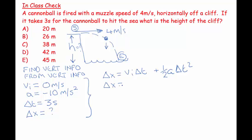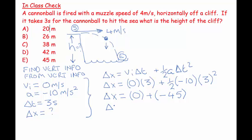So Δx = (0)(3) + ½(-10)(3)². So Δx = 0 + (-5)(9). Δx = -45. So my Δx equals -45 meters.